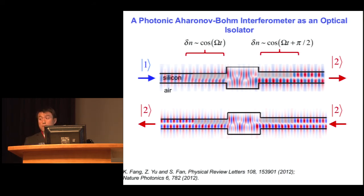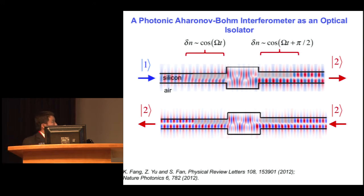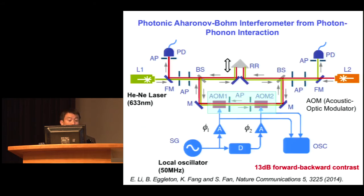Here is the initial numerical calculation. We modulate the refractive index in two shaded regions at the same frequency, but with a modulation phase that differs by pi over 2. In doing so, an even mode coming in gets converted to an odd mode. But if you send the odd mode back, it doesn't go back to the even mode — instead it remains in the odd mode. That is a clear indication of time-reversal symmetry breaking, and this is already sufficient to give you complete optical isolation.